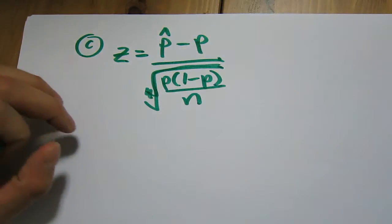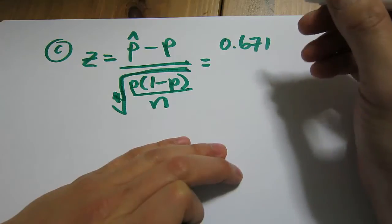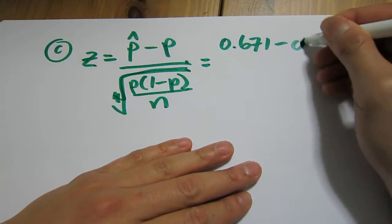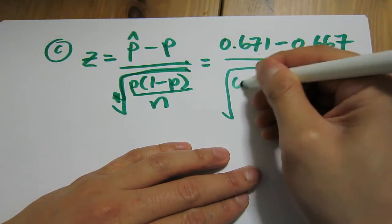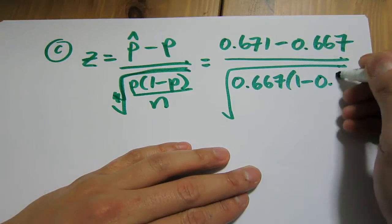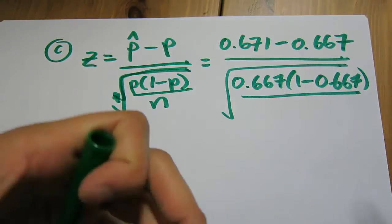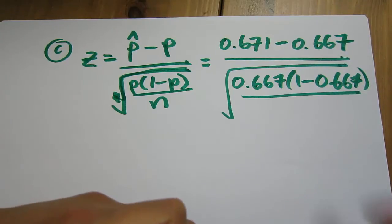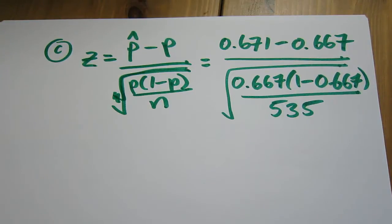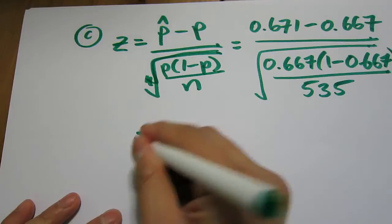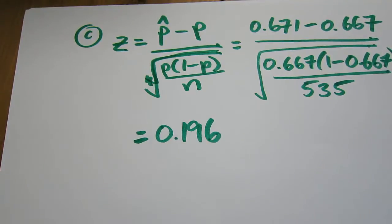If we plug our numbers in, we get 0.671 minus 0.667, divided by the square root of 0.667 times (1 minus 0.667) divided by N. N is the sample size — how many people we surveyed — which is 535. This is our test statistic. If you punch this into your calculator, you get 0.196. So this is our Z-score.